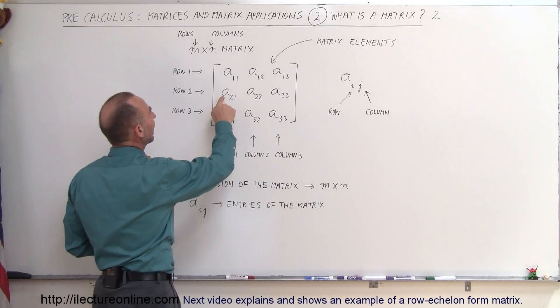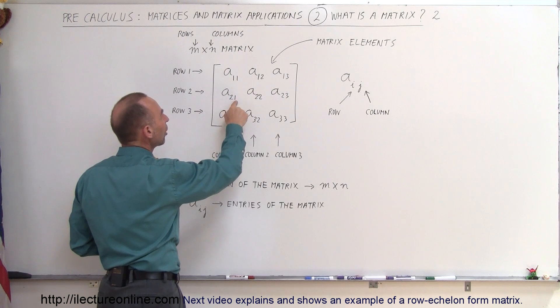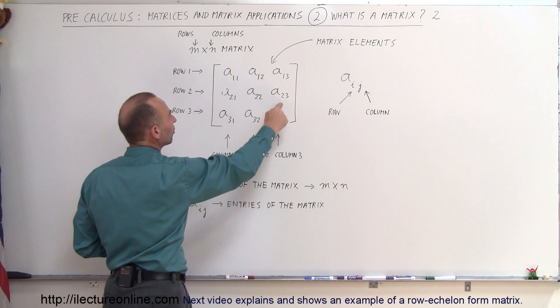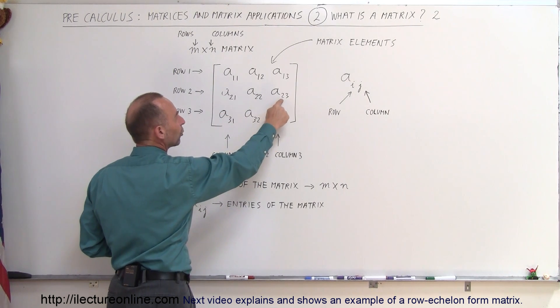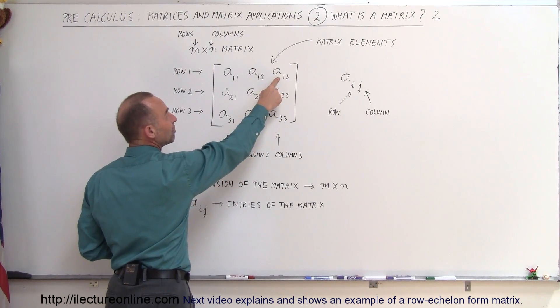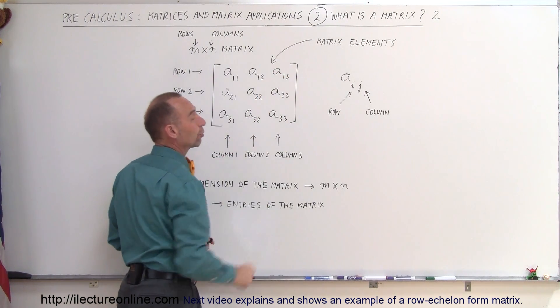So in this case, this is A row 2, column 1. You go second row, first column, so this is A 2,1. Here's A 2,3 - that means the second row, third column. A 3,2 means the third row, second column. A 1,3 means the first row and the third column.